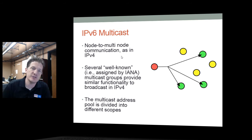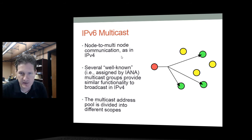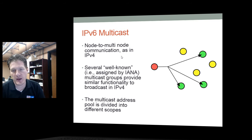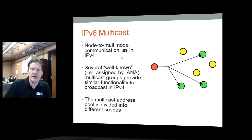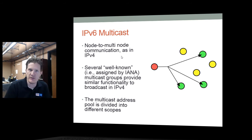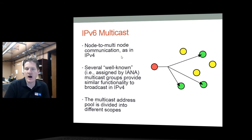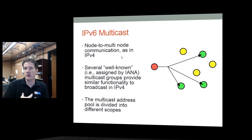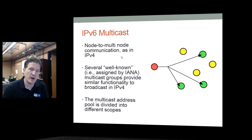Multicast works the same way it did in IPv4 — one machine sends to a group of machines. There are several established, well-known multicast groups, and if we take advantage of those groups, IPv6 multicast functionality will behave just like IPv4 broadcasts did. Multicast addresses are also divided into scopes, just like unicast addresses are.